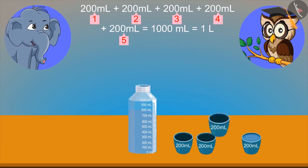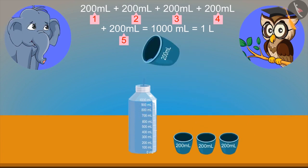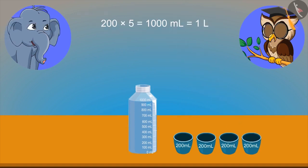So, if in this bottle, we pour 200 ml of water for 4 times, then it will become 1 litre. Very good, elephant. 5 times will make 1 litre.